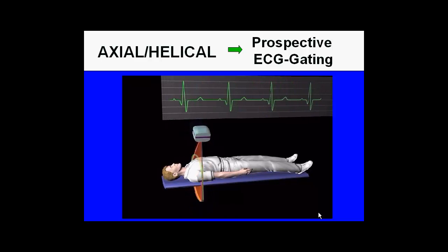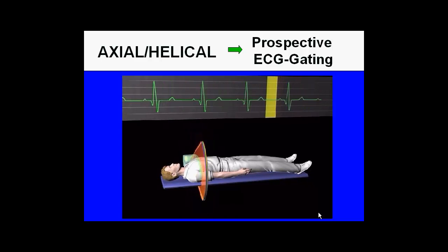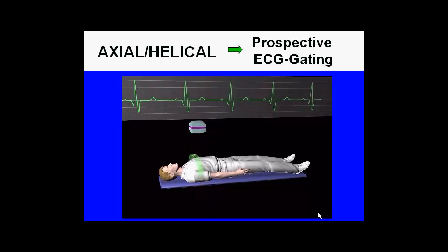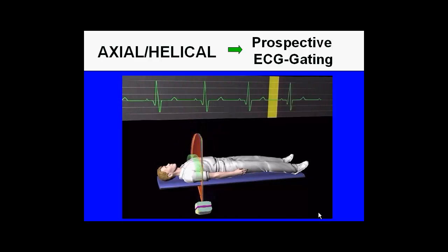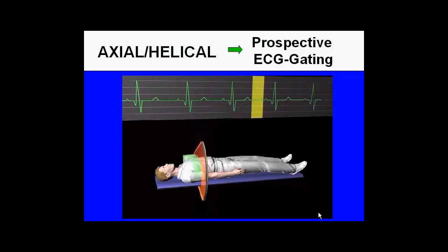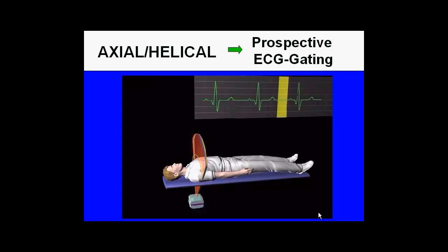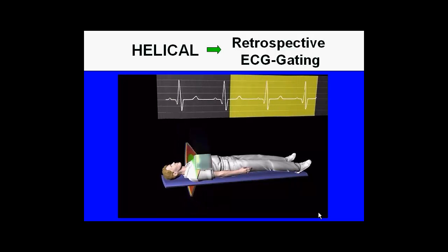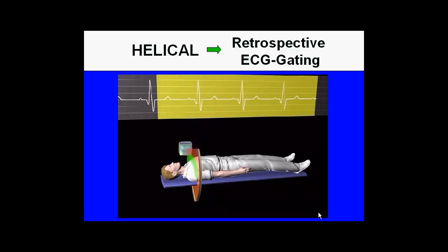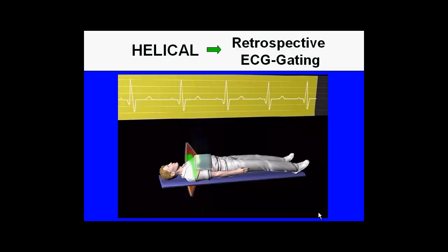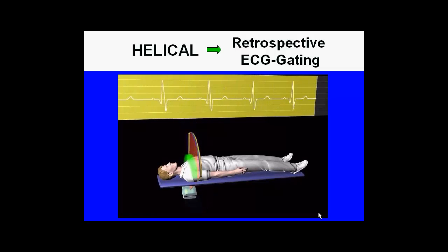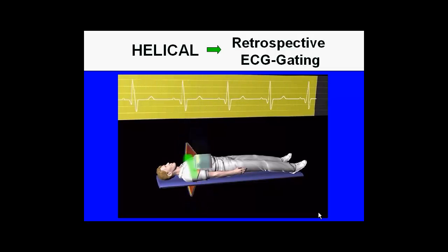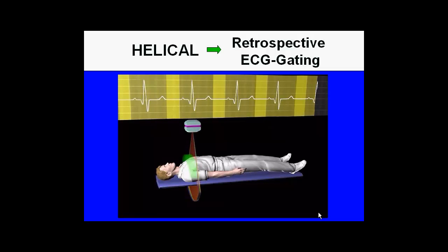For cardiac imaging, you can do prospective ECG gating, which basically turns on the camera only at a certain time during the cardiac cycle. This significantly reduces radiation exposure and is done either in an axial or step-and-shoot axial manner. The other method is retrospective ECG gating, where the camera is on the entire time as the patient table is moving to acquire spiral-like images. This produces the most radiation but also provides the most data for retrospective reanalysis.